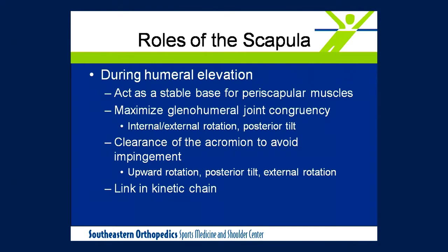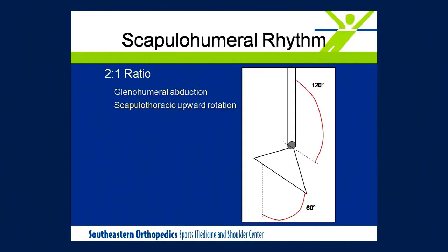As the arm is being elevated, the greater tuberosity of the humerus comes into close approximation with the inferior surface of the acromion. So in order to avoid impingement, the acromion must move out of the way — the scapula upwardly rotates, posteriorly tilts, and externally rotates. The scapula is also a very important link in the kinetic chain, so that forces transmitted up through the ground provide for motion of the arm. We're all pretty well aware of the scapulohumeral rhythm, whereby for every two degrees of glenohumeral motion, there is one degree of scapulothoracic upward rotation.